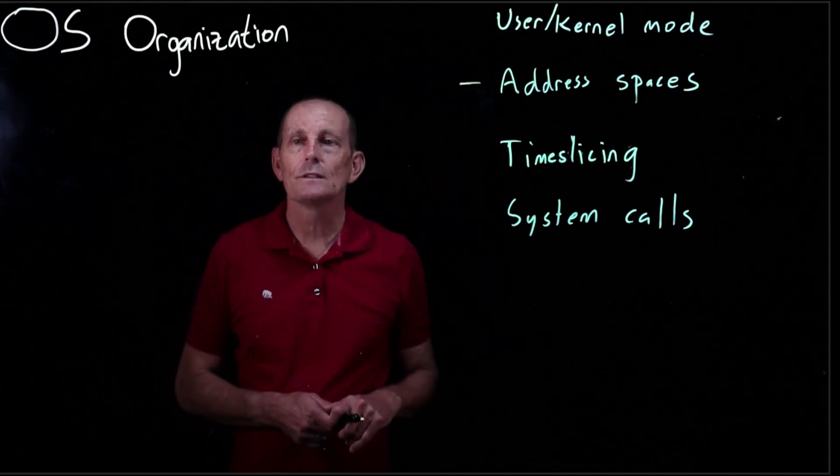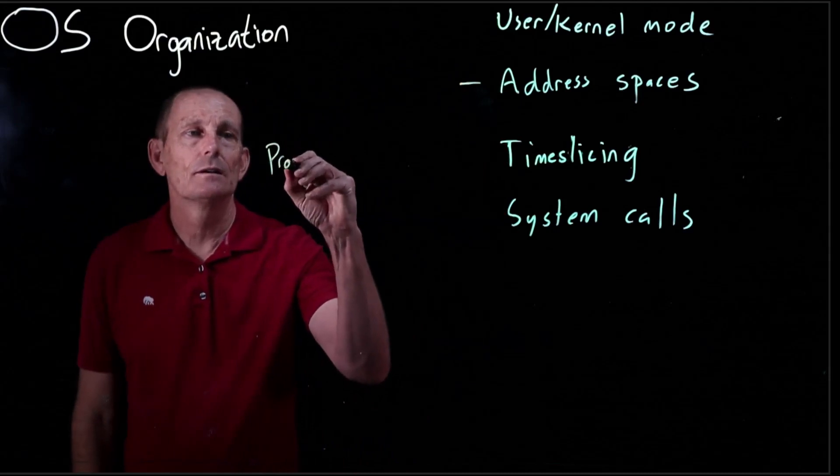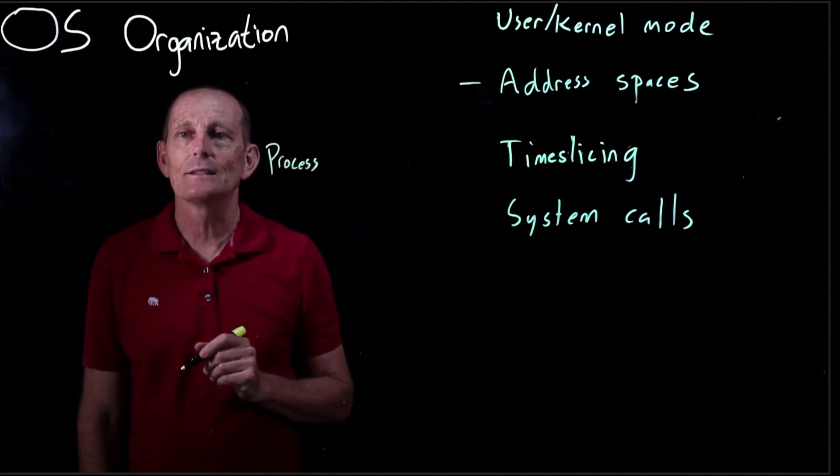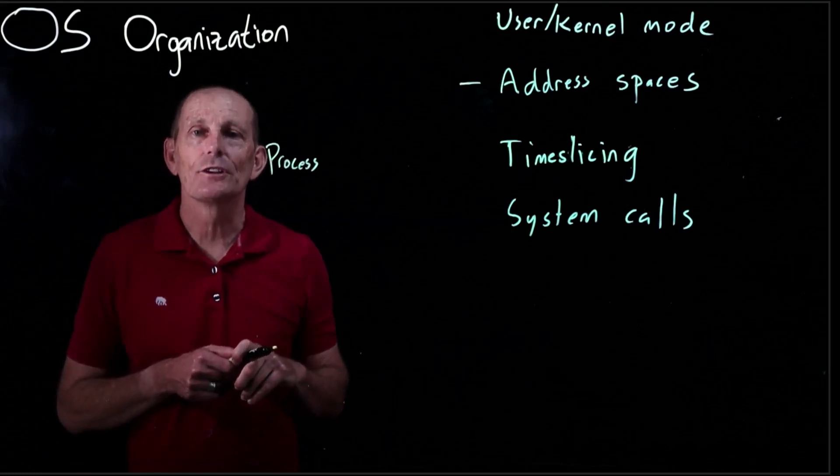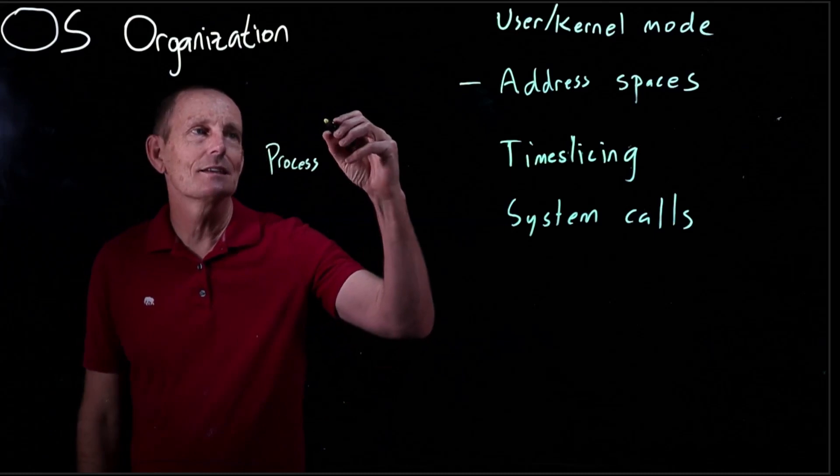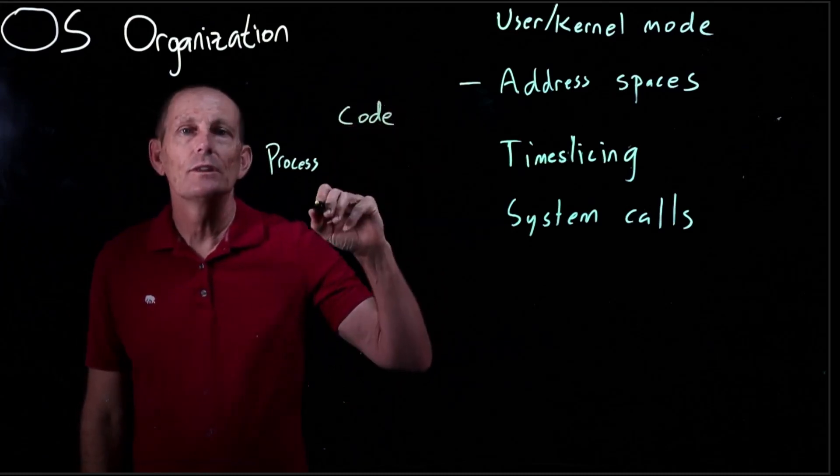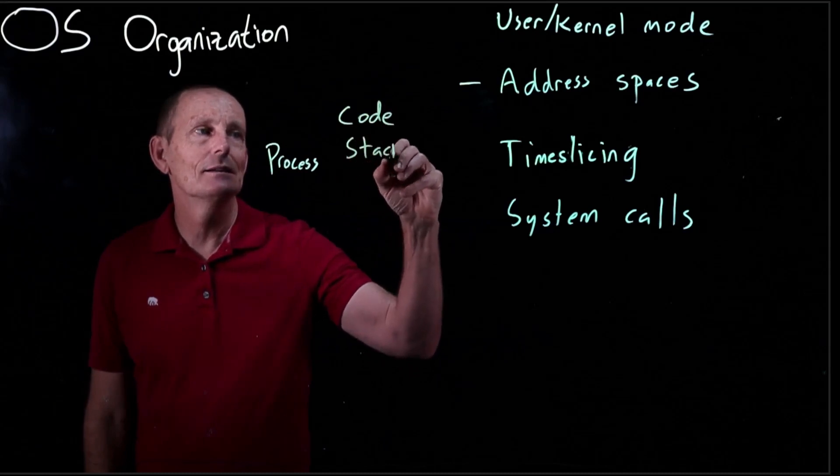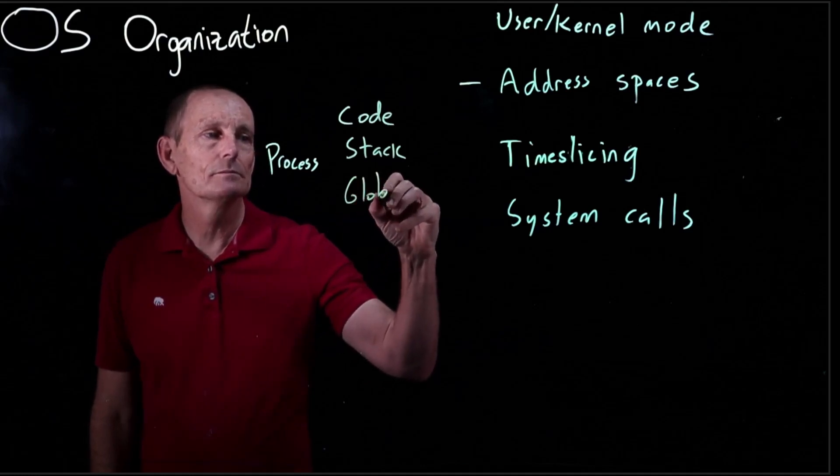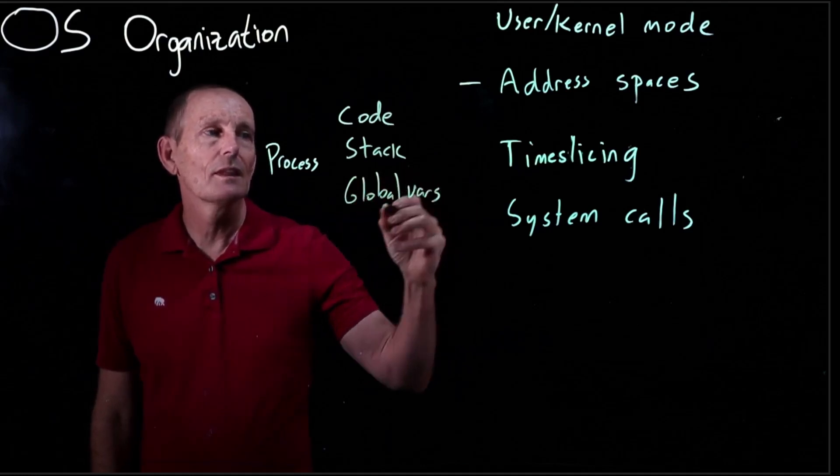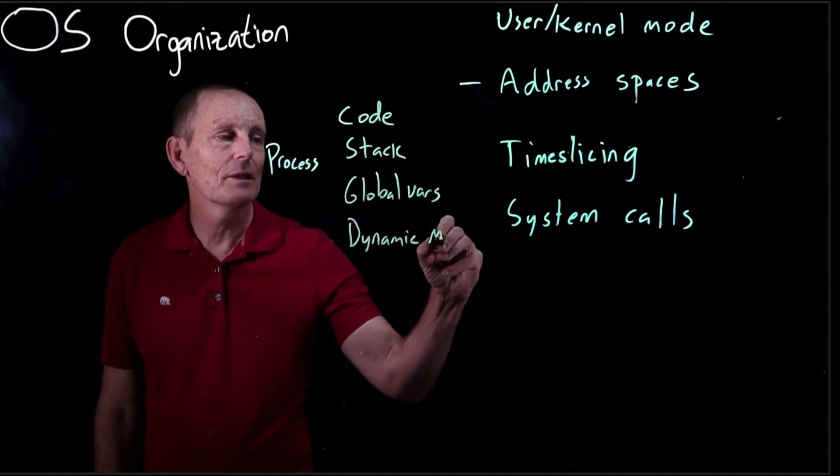So next let's look in more detail at address spaces. What's an address space? Well, we've got a process. And it has to have access. That is, when the processor is running, the processor needs to access the process's code, the process's stack, the process's global variables, and the process's dynamically allocated memory.